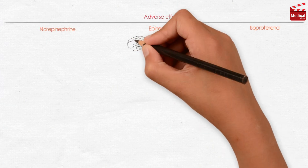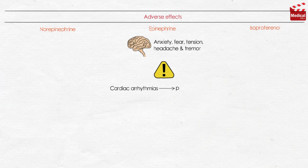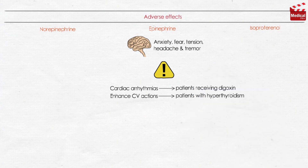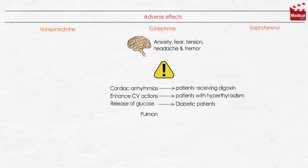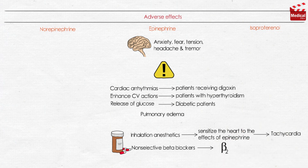Epinephrine can produce adverse CNS effects including anxiety, fear, tension, headache, and tremor. Epinephrine dose should be monitored as it can trigger cardiac arrhythmias, particularly if the patient is receiving digoxin. It may enhance cardiovascular actions in patients with hyperthyroidism, so the dose must be reduced. It increases release of endogenous glucose stores, so in diabetic patients, insulin dosages may have to be increased. It can also induce pulmonary edema. Inhalation anesthetics sensitize the heart to the effects of epinephrine, which may lead to tachycardia. Non-selective beta blockers prevent vasodilatory effects of epinephrine on beta-2 receptors, leaving alpha receptor stimulation unopposed, leading to increased peripheral resistance and increased blood pressure.